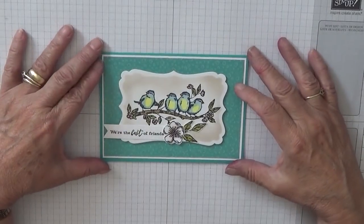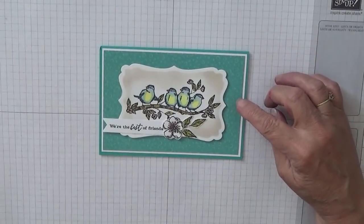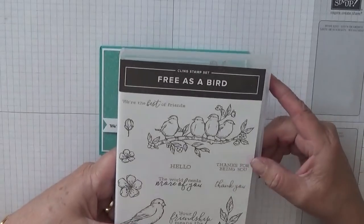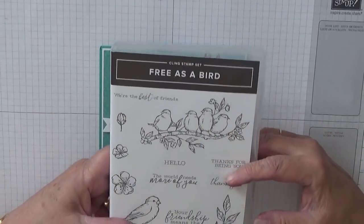Hi everybody, Georgia Burns here. Today I'd like to show you how I made this card. To make this card I used a stamp set Free As A Bird which is a brand new stamp set at the 2019-2020 catalogue.